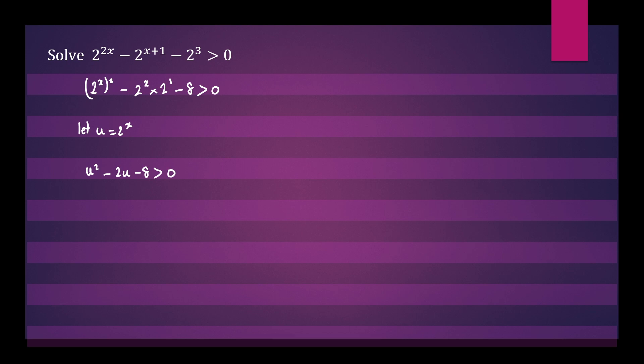But now we have a quadratic inequality that we need to solve. Let's first factorize it. We'll get (u - 4)(u + 2) > 0.